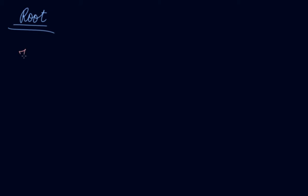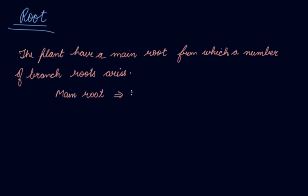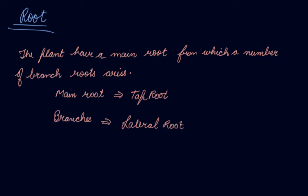In this video we will be studying about roots. A plant has a main root from which a number of branch roots arise. The main root is called the tap root and the branches are known as lateral roots.